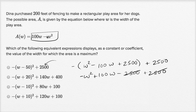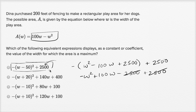What they're asking us — one way to think about it — is which of these shows the maximum value? Which of these forms of the expression makes it easy for us to find what the maximum value is going to be? Let's look at this first one and think about how this expression works.